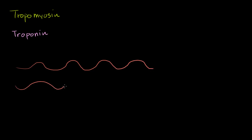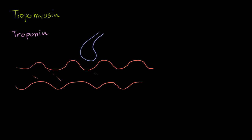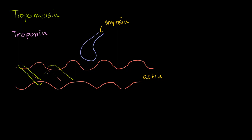On top of this actin, we have the myosin head — one of the two heads of myosin-2. And then we have tropomyosin, which coils around the actin. You can imagine it coiling around the front, going back behind it, then coiling around again. So it's wound around the actin filament.